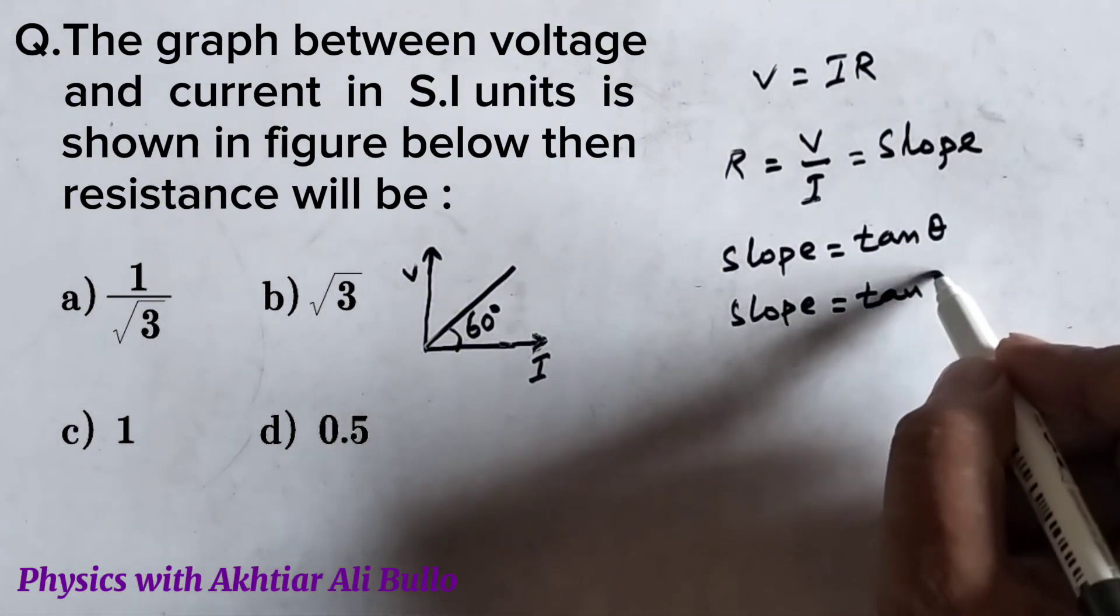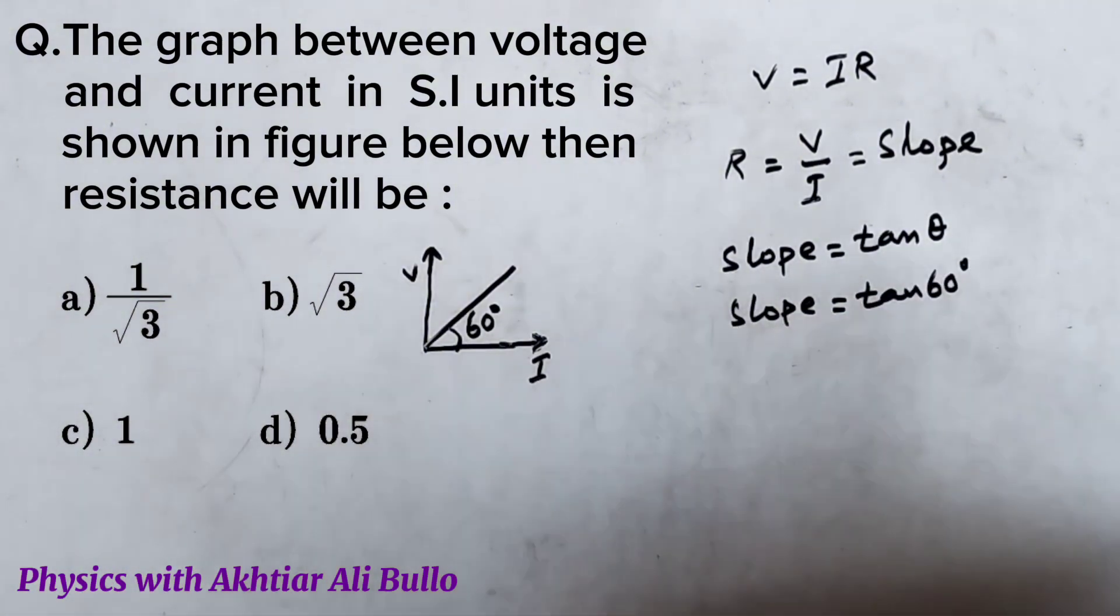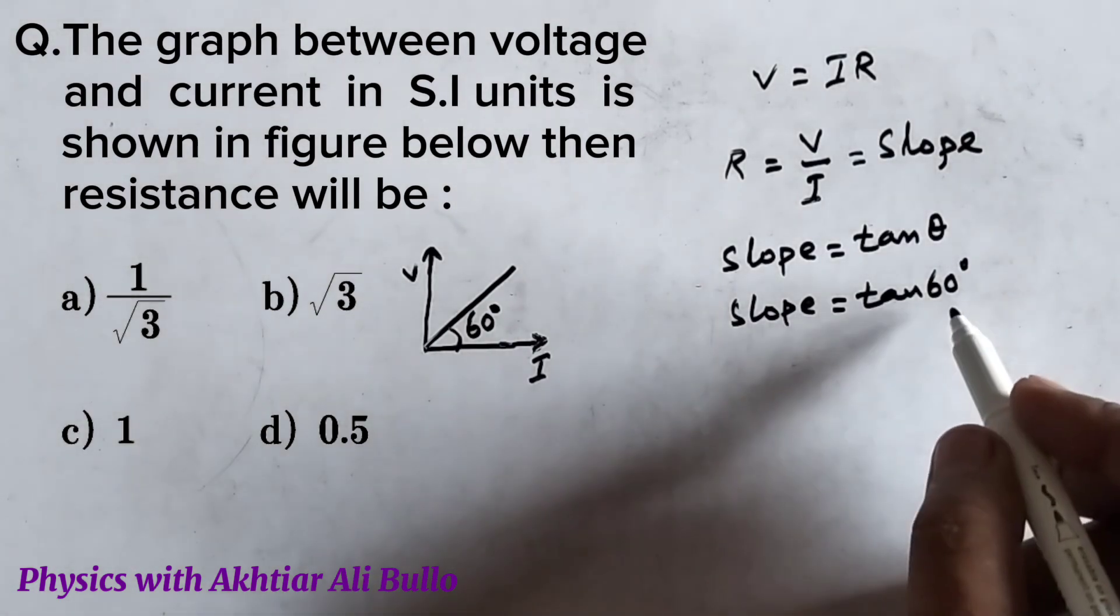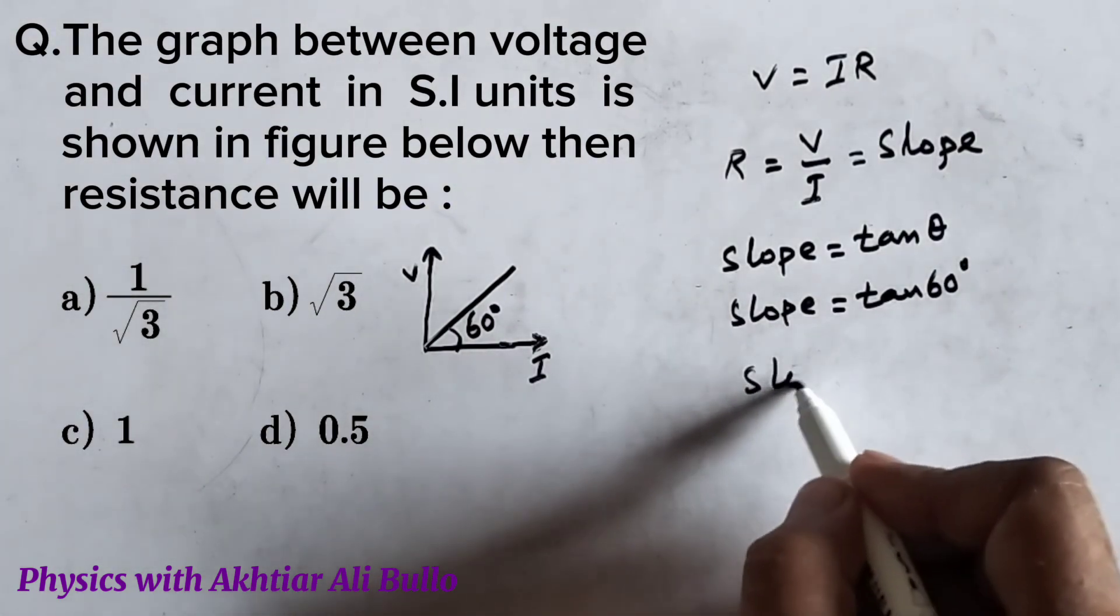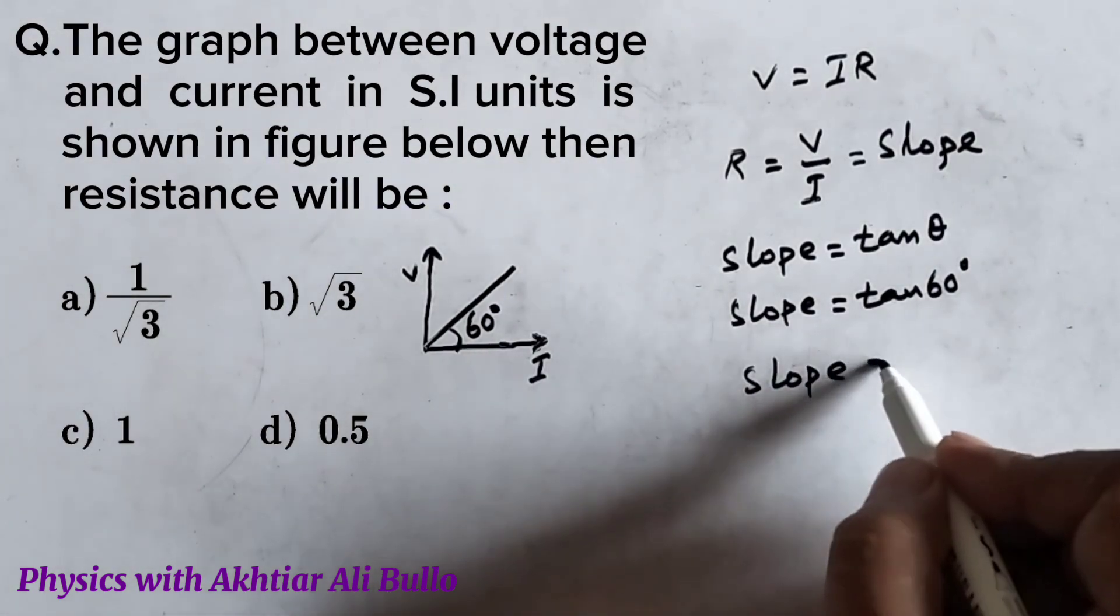So slope will be obtained as tan theta. As theta is obtained as 60 degrees, the value of tan 60 is under root 3.